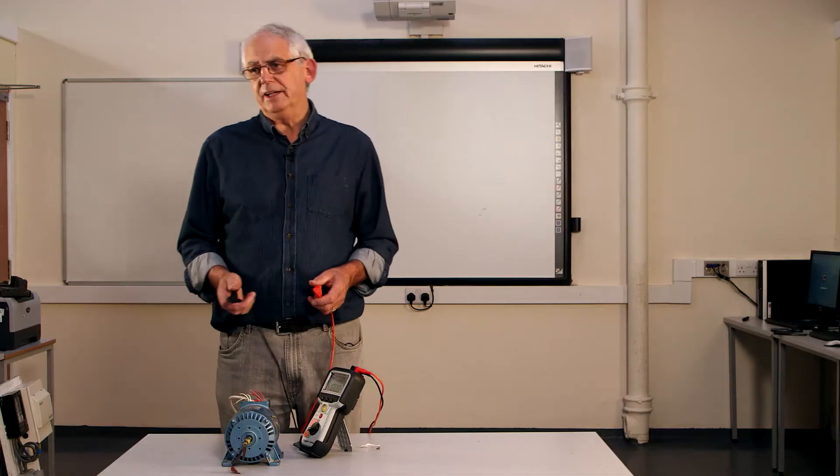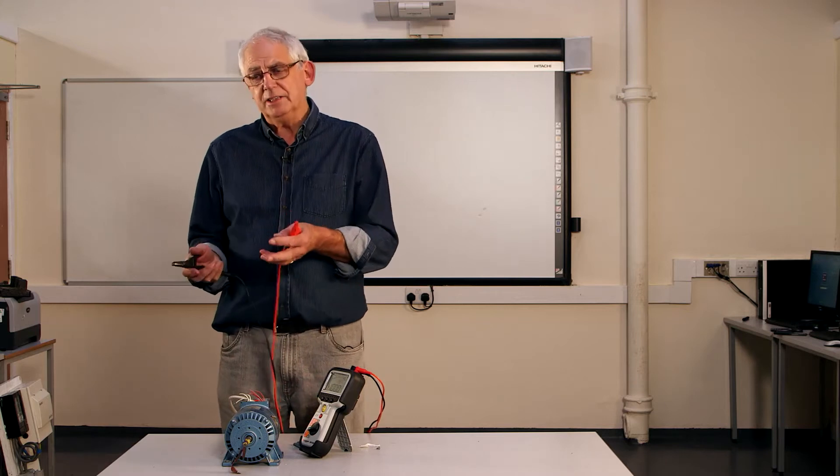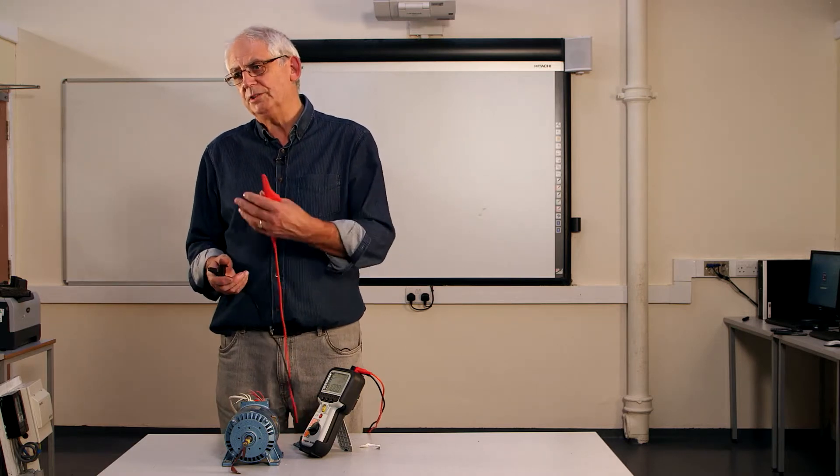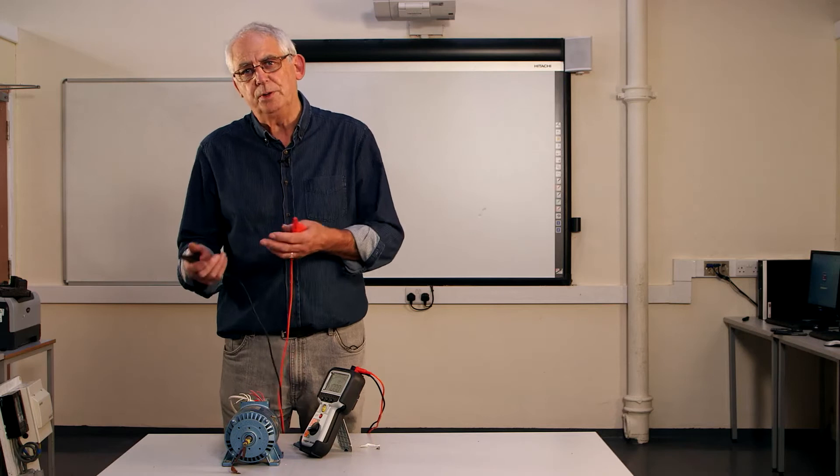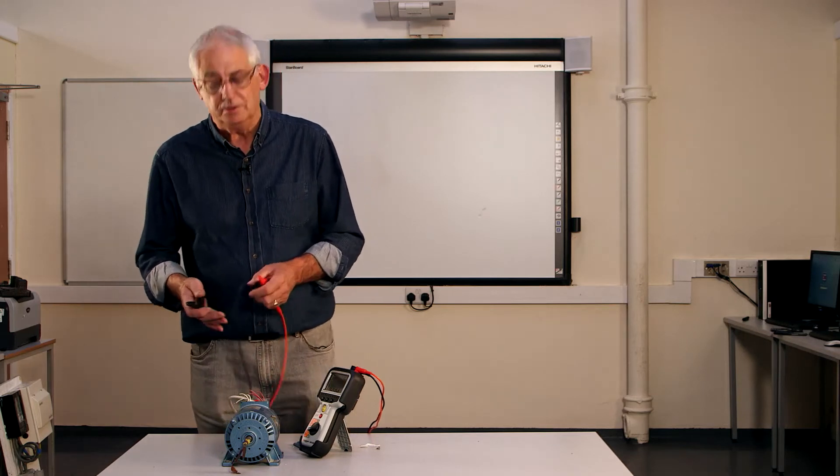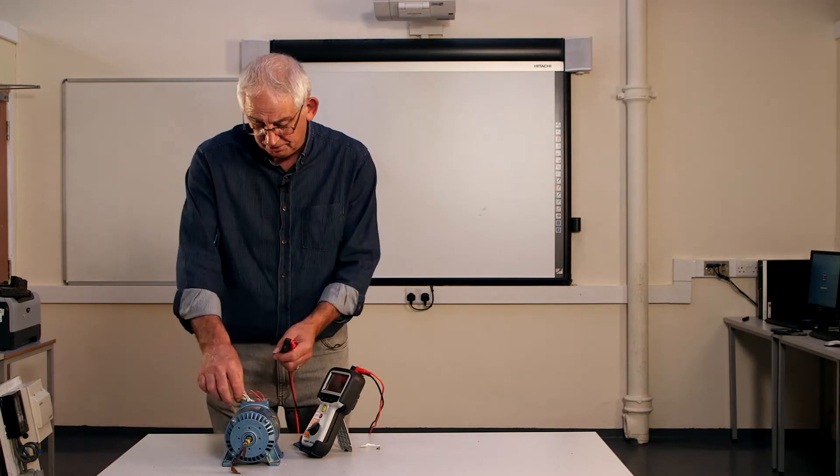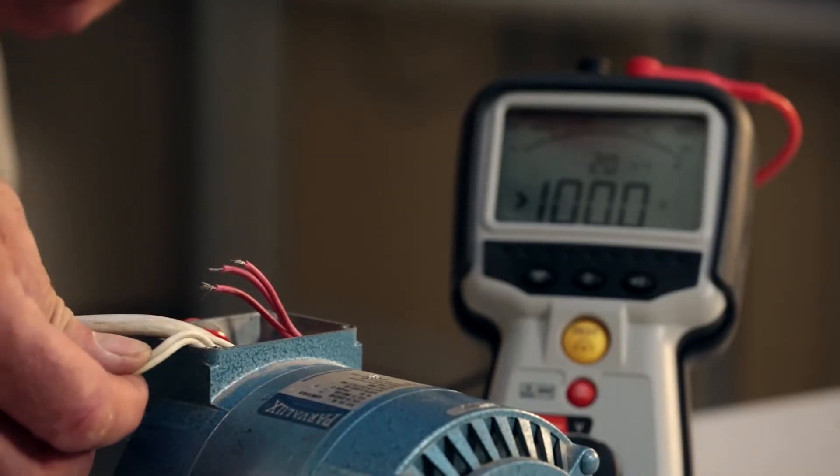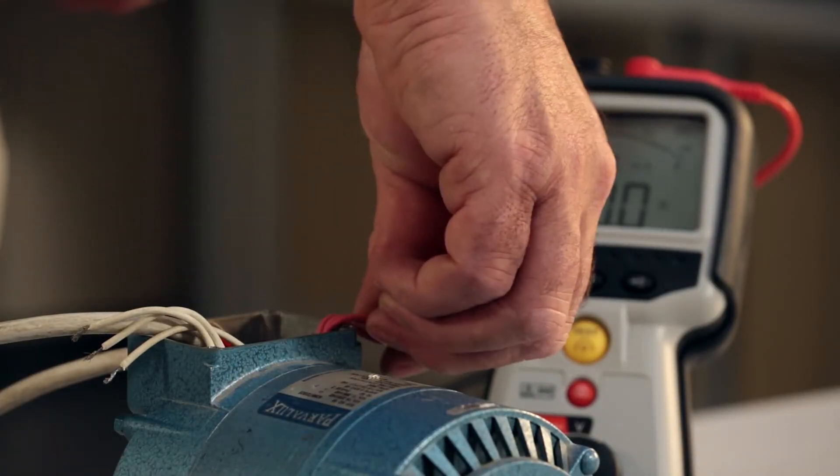Having zeroed the leads, I now need to identify the ends of the windings and make sure that each of the windings has got pretty much the same resistance value. So first of all, we can obviously tell that one end of all of the windings are going to be white and one end, the other end are going to be pink.